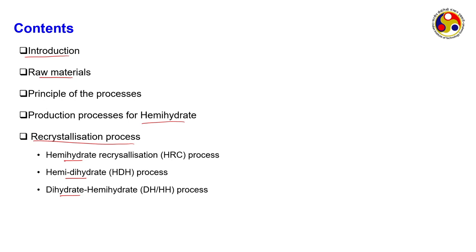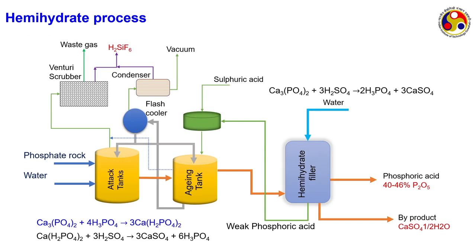The two basic processes are dihydrate and hemihydrate. This process flow sheet is similar to what we saw earlier. The main reaction is calcium phosphate ore reacting with sulphuric acid to form phosphoric acid. This weak solution of phosphoric acid is again sent back to the ore, because otherwise it will form a calcium sulphate layer on top of the ore which will prevent further reaction.